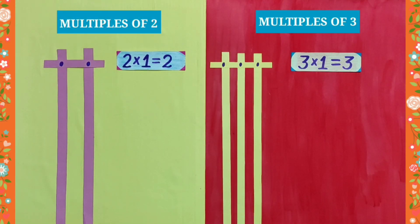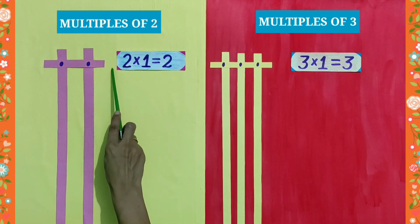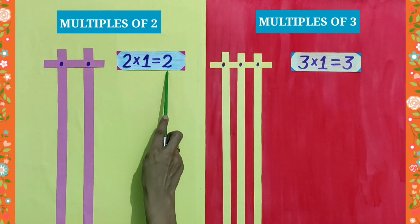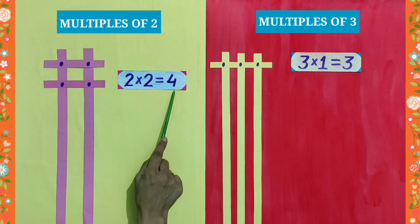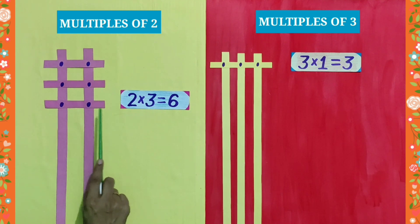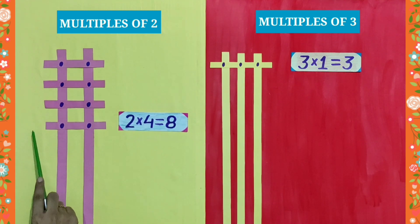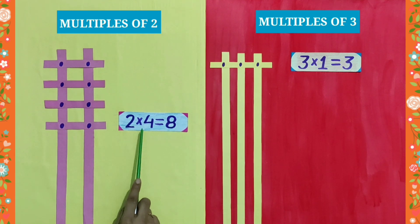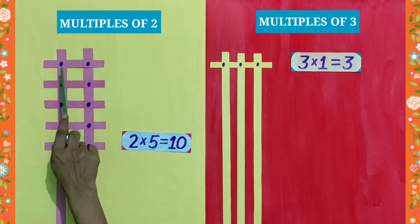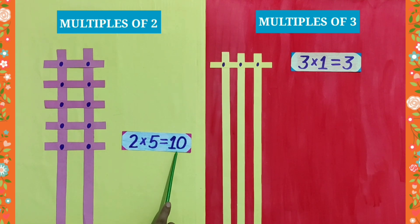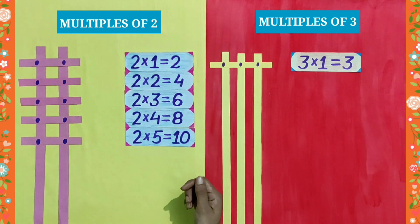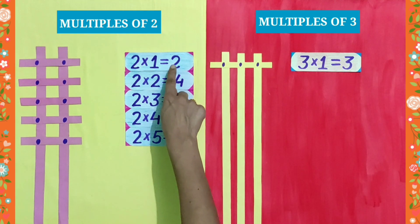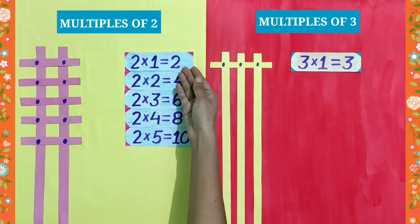Dear students, while obtaining the multiples of 2, when we use two vertical strips and place one horizontal strip over them, we get two points of intersection and the first multiple is 2. The second time, four points of intersection and the second multiple is 4. The third time, six points of intersection and the third multiple is 6. The fourth time, eight points of intersection and the fourth multiple is 8. And the fifth time, ten points of intersection and the fifth multiple is 10. Now, students, look at the multiples of 2. Which is the smallest one? It is 2. So, it means the smallest multiple of 2 is 2 itself.